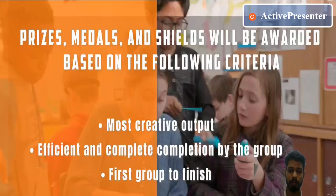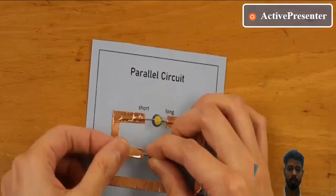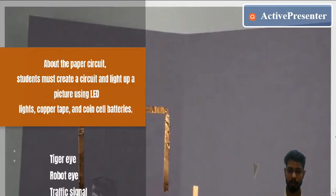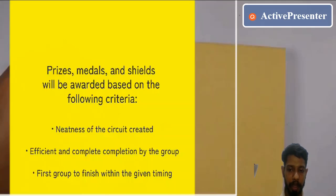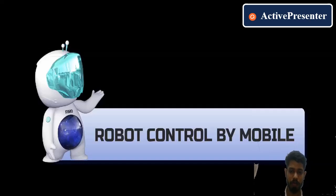Paper circuit competition: four members per team, one hour. Students must create a circuit and light up a picture using LED lights, copper tape, and coin cell batteries. The picture options are tiger, robot, or traffic signal. Prizes, medals, and shields will be awarded based on neatness. The paper circuit will be taught by us through online sessions. Judging criteria also includes completion by the group and first group to finish within the given timing.